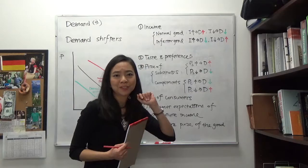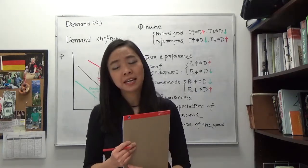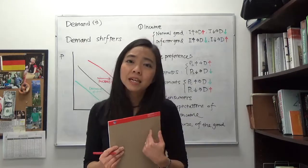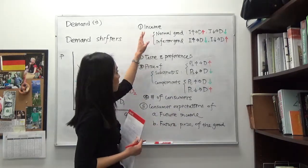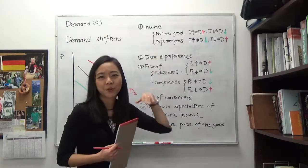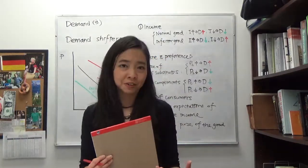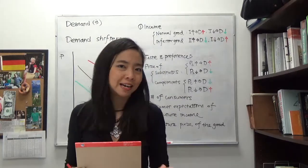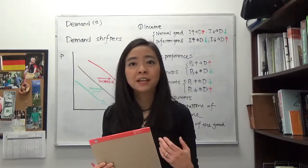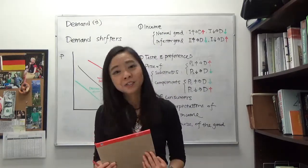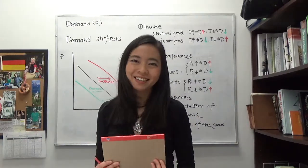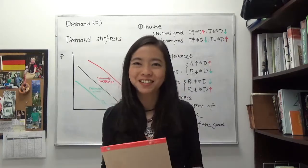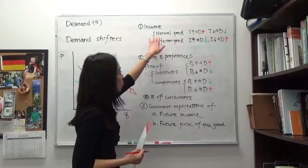The first one is income. When there is an increase in income, whether that increases or decreases our demand really depends on whether you're talking about a normal good or an inferior good. A normal good by definition is: when your income goes up, you consume more. Think about the things you like in your daily life — maybe nice fancy Italian restaurant meals, nice cars, or movie tickets. When your income goes up, you're going to consume more of these. So we call them normal goods.